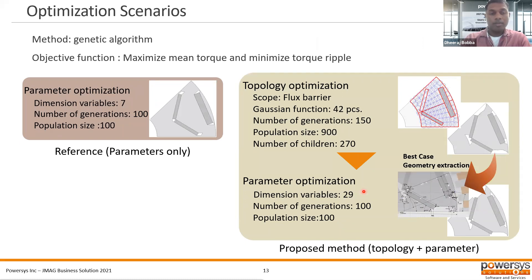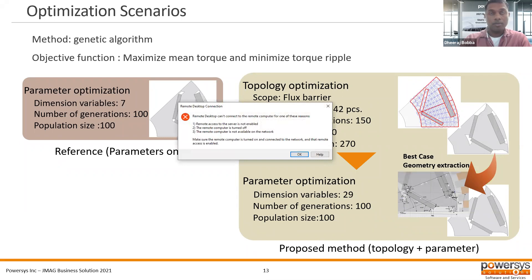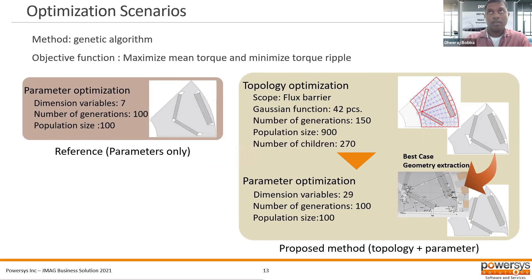For the scenario comparison, we did both steps. The first is parametric optimization only, for reference. Then we do the two-step optimization as described. The Gaussian functions for the rotor shape are 42, the number of generations is 150, and the population size is 900. Proceeding to the parametric optimization from that result, the dimension variables are 29 variables that describe the rotor, with number of generations at 100 and population size at 100.